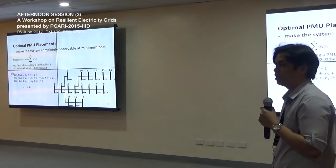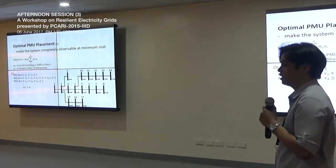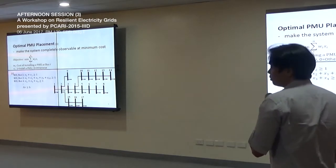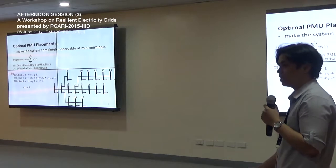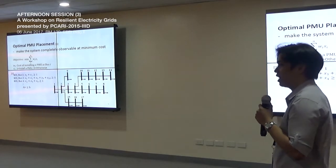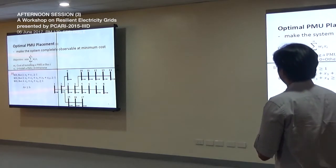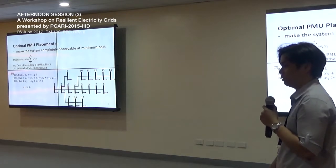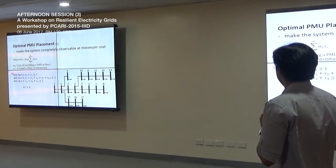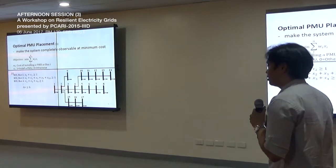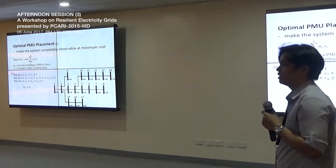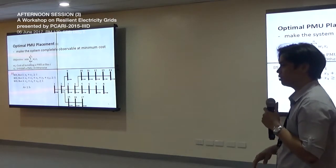Completely observable means all the magnitude and phase angles of all voltages of all buses are known. Minimum cost includes installation cost, maintenance, cost of communication, and so on. For this presentation, we assume the cost of installing a PMU at any bus is the same for simplicity. The objective function minimizes cost, where w_i is the actual installation cost for bus i, and x_i is the binary decision variable for whether a PMU is installed at that bus.